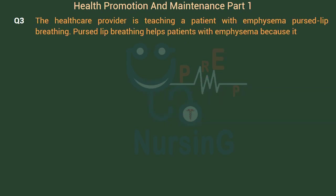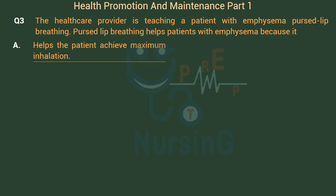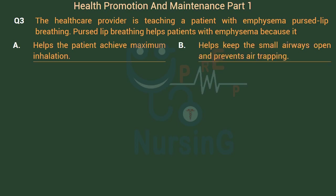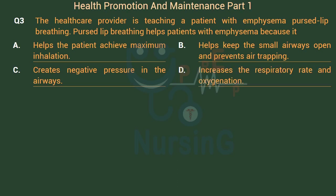The healthcare provider is teaching a patient with emphysema pursed-lip breathing. Pursed-lip breathing helps patients with emphysema because it: Option A: Helps the patient achieve maximum inhalation. Option B: Helps keep the small airways open and prevents air trapping. Option C: Creates negative pressure in the airways. Option D: Increases the respiratory rate and oxygenation.